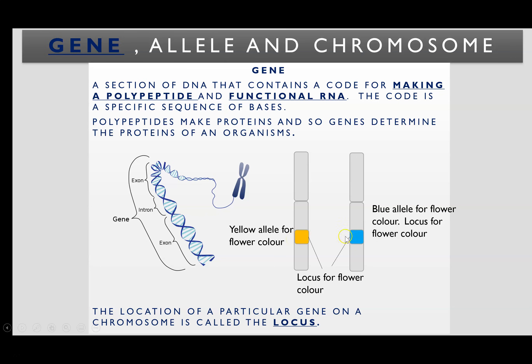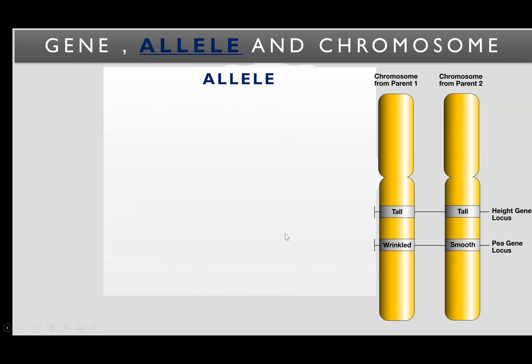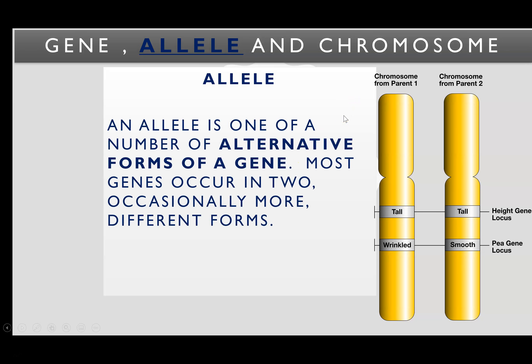They have different versions though, and that leads us to our second definition: allele. An allele is a different form of the same gene — a different version, an alternative form. Individuals have exactly the same genes — a gene to code for a particular polypeptide — but you might have a slightly different base sequence or version of that gene, resulting in a slightly different protein being created. In this plant example, we've got the gene for height and we're shown the locus of that gene.